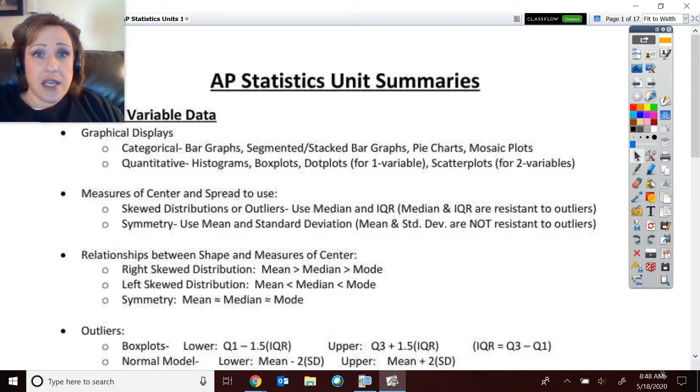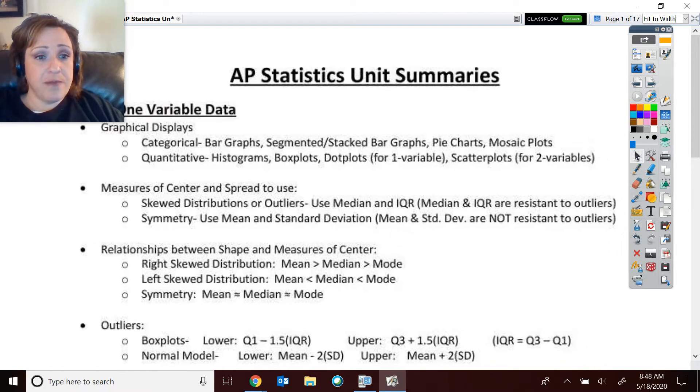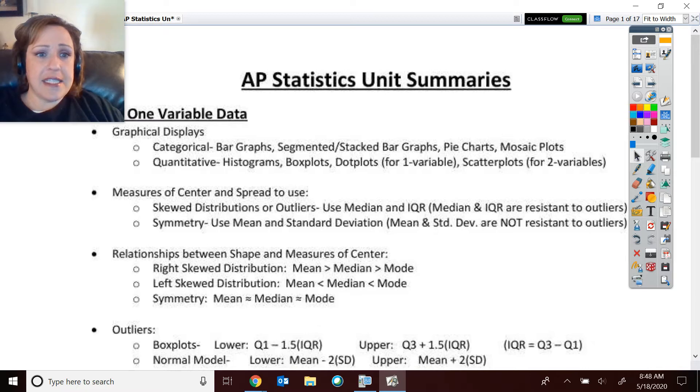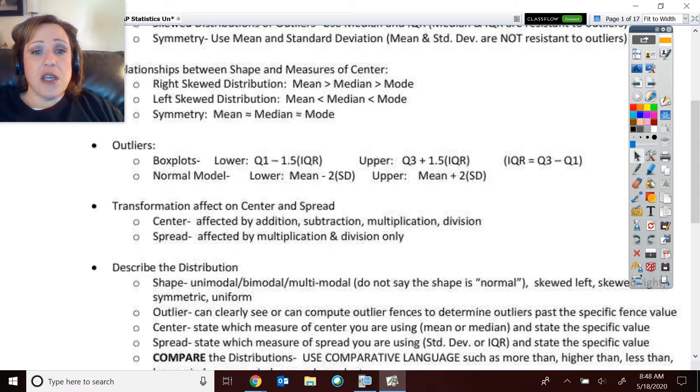So here, unit one is just our one variable data. The key, I tried to lay out the keys here, the different types of graphical displays. I didn't show you pictures of those. You'd have to go back to the unit reviews on those to look at all the specifics. The connection between center and spread and shape, when you use what particular shape for what particular type of spread and because of the resistance to outliers.